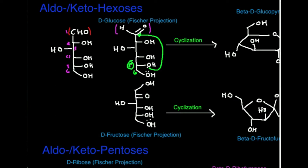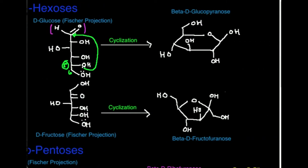When you do that cyclization reaction for glucose, you get a characteristic six-membered ring where one of the atoms in the ring is the oxygen — that oxygen is the one that did the nucleophilic attack. The oxygen on the anomeric carbon in the Haworth projection corresponds to a specific oxygen back in the Fisher projection.